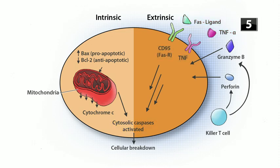There's another extrinsic mechanism: when killer lymphocytes — mainly cytotoxic T-cells — recognize a cell as foreign or infected, they release perforin and granzyme B. Perforin punches holes in the plasma membrane, then granzyme B enters the cell and activates the caspases directly.